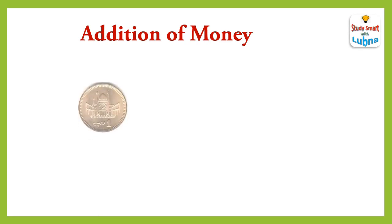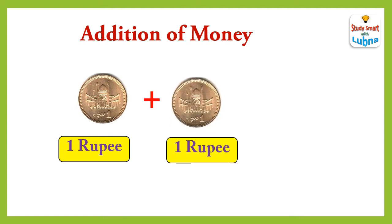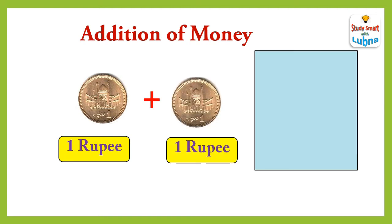When we add 1 rupee coin with 1 rupee coin, what will we get? Let's check. Rupee 1 plus rupee 1 — when we add them, we will get rupees 2.